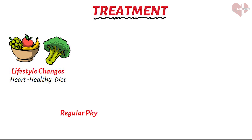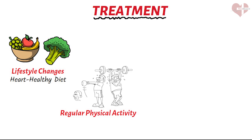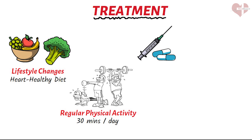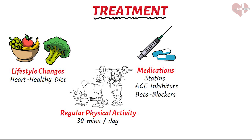Regular physical activity is also an important part of treatment for coronary artery disease. Your healthcare provider may recommend at least 30 minutes of moderate-intensity exercise most days of the week, such as brisk walking, cycling, or swimming. Medications may also be used, including cholesterol-lowering drugs such as statins, and medications to lower blood pressure such as ACE inhibitors or beta blockers. Other medications such as aspirin or blood thinners may also be used to prevent blood clots and reduce the risk of heart attack or stroke.